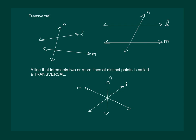That means in this figure line N is not a transversal as it is not intersecting L and M at distinct points. It is intersecting at a single point. Hence, N is not a transversal in this case.